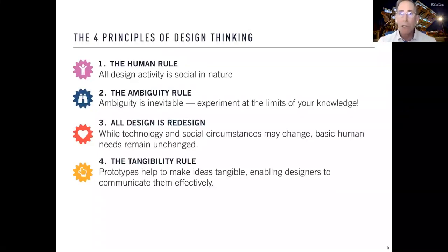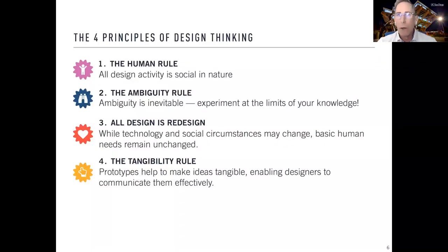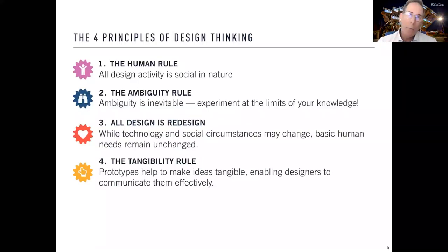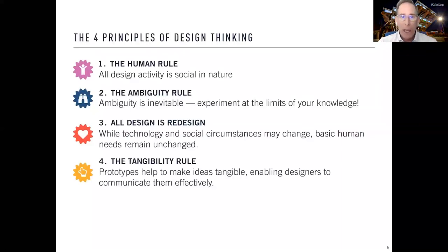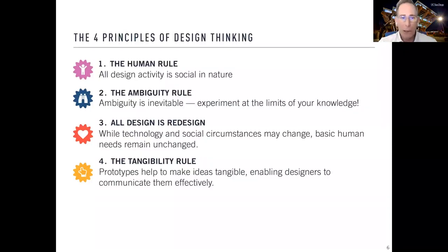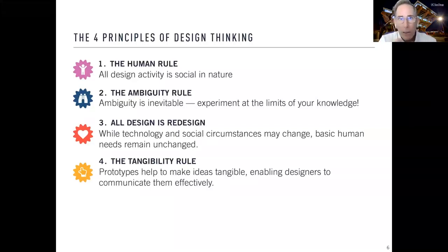The second principle is that ambiguity is important because ambiguity is inevitable — only when things are unclear and uncertain do we get up out of our chairs and look for answers or explore new things. The third principle is that all design is redesign. People have said all invention is reinvention: while technology and social circumstances may change, our basic human needs do not. The fourth principle — tangibility — is that we create prototypes and artifacts, because when we can put something in our hands and react off of it and look in someone's eyes and react off their expressions, that's so much better than just intellectualizing about what may or may not happen.